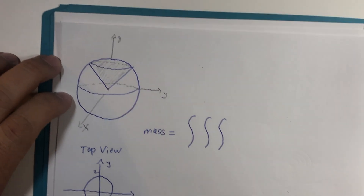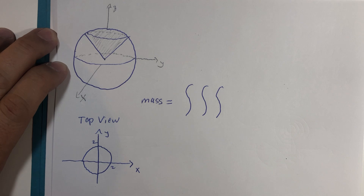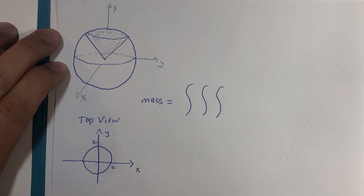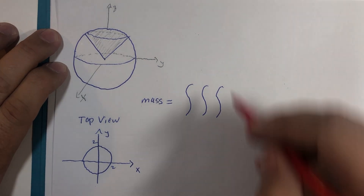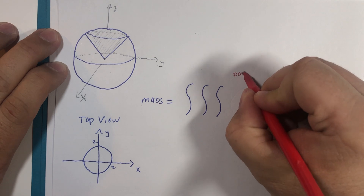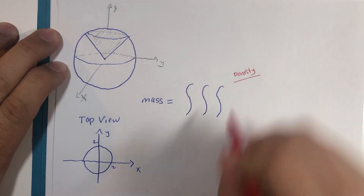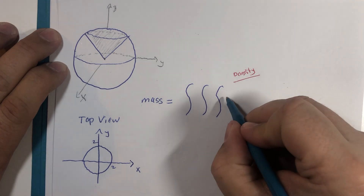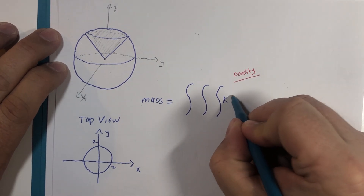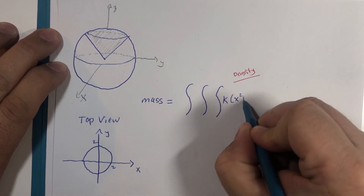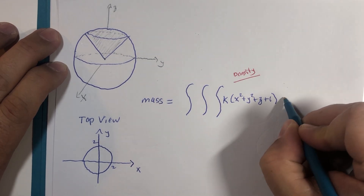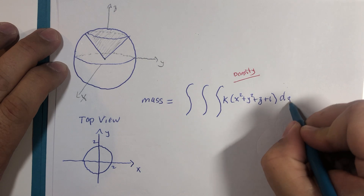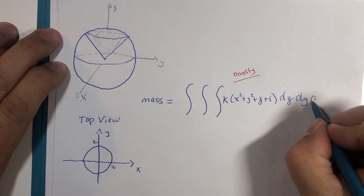To calculate mass, we put the density function as the integrand: k multiplied by the quantity x squared plus y squared plus z plus 1, dz dy dx.